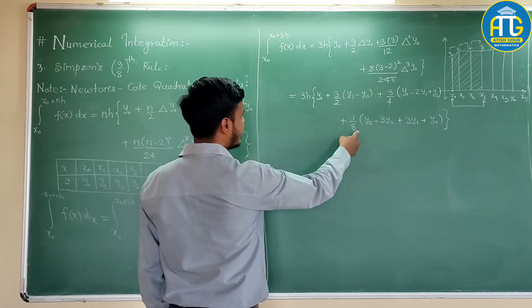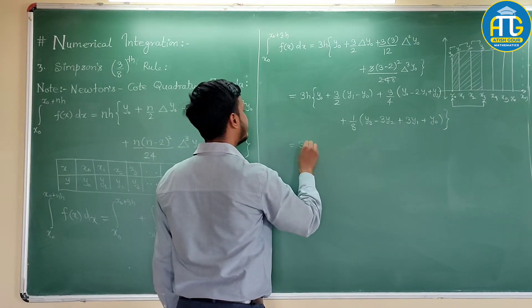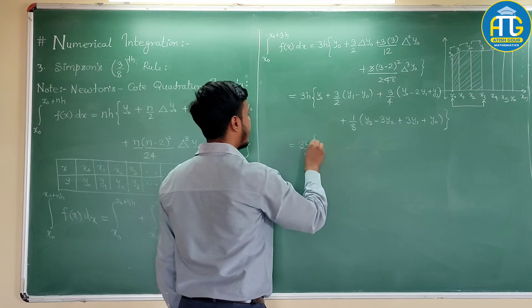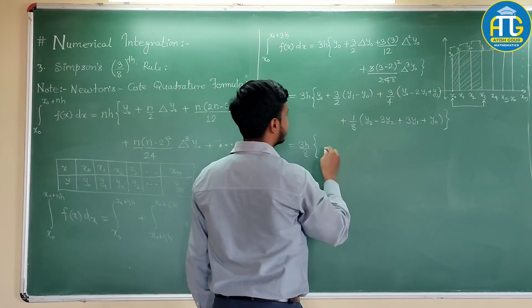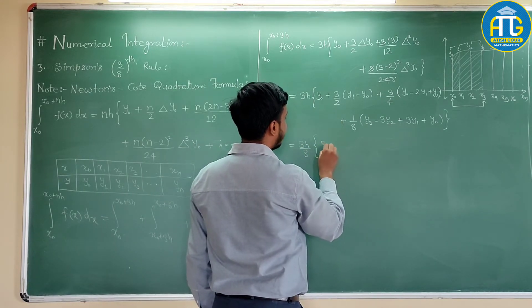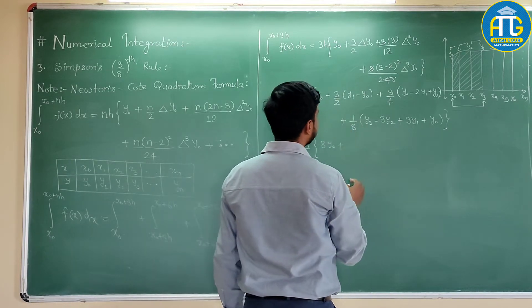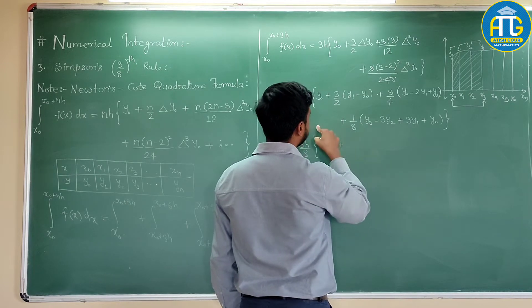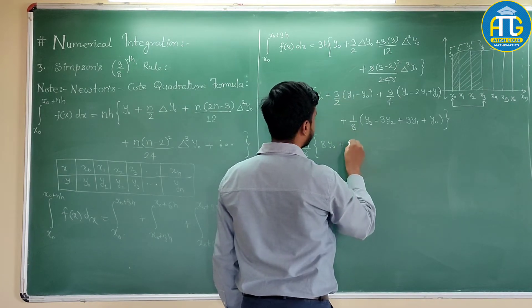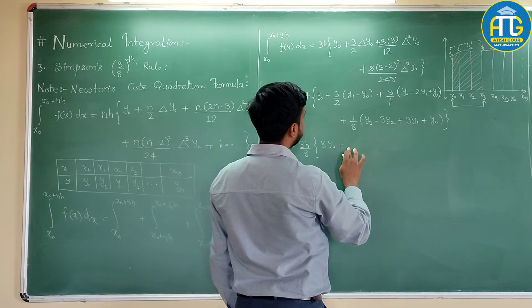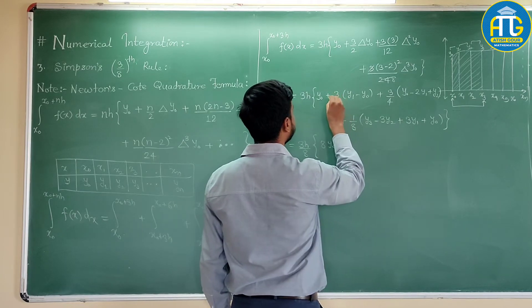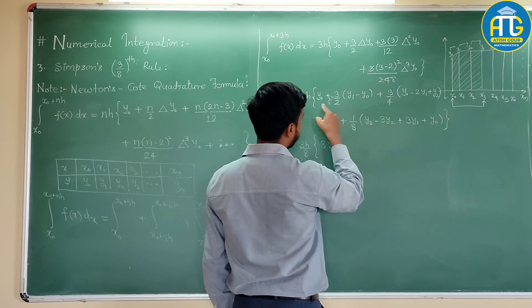Now you can take 8 common here, you would get 3h by 8, and you remain with, what is this? This is 8 times y0 plus, this is, I am taking 8 outside, so this is 24, 12, multiplying by 8.